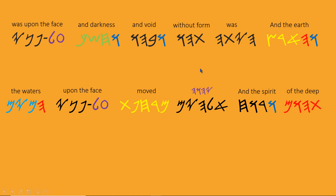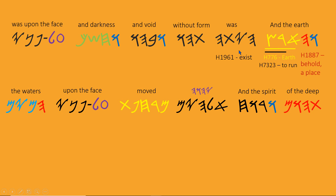Again we have the Yahudith reading from right to left, the English writing above each word, and the verse as written in everyone's scripture book: 'And the earth was without form and void and darkness was upon the face of the deep, and the spirit of Yahua moved upon the face of the water.' Let's dig in. 'Ha' again means place. 'Arts' — the place of the earth, the place of chief running, because the aleph is in front as leader.